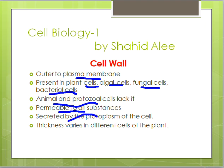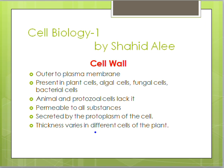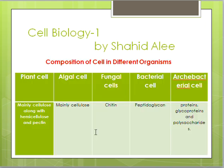The cell wall is a non-living structure secreted by the protoplasm — the living matter of the cell. It is permeable to all substances. Composition varies: plant cells have mainly cellulose; fungal cells have majorly chitin; bacterial cells have peptidoglycan (murein). Bacterial cells also contain proteins, glycoproteins, and polysaccharides.